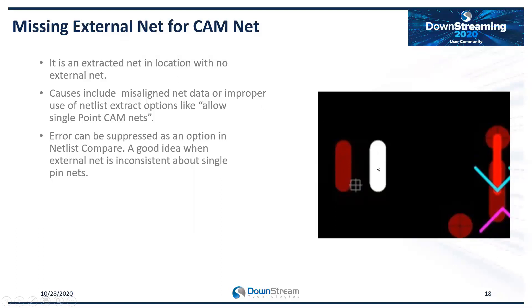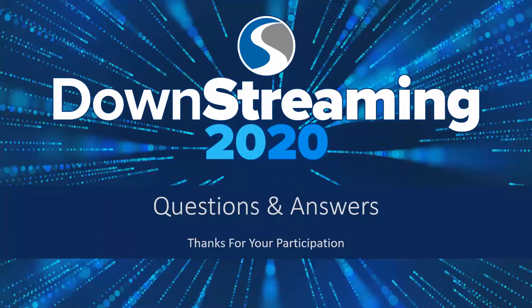Finally, 'Missing External Net for CAM Net' — possibly more serious. This is when CAM 350 has placed a net on something but the external net has nothing. In this example, we checked 'Allow Single Pin Nets' and extracted that way, but if this pad actually had tracing or a copper fill, that would be a piece of copper the external net did not mention. It might be text, in which case you can feel fine about ignoring it — but it might also be something real on the board that isn't being checked. That covers pretty much everything with netlist compare in CAM 350. We'll open the floor to questions.